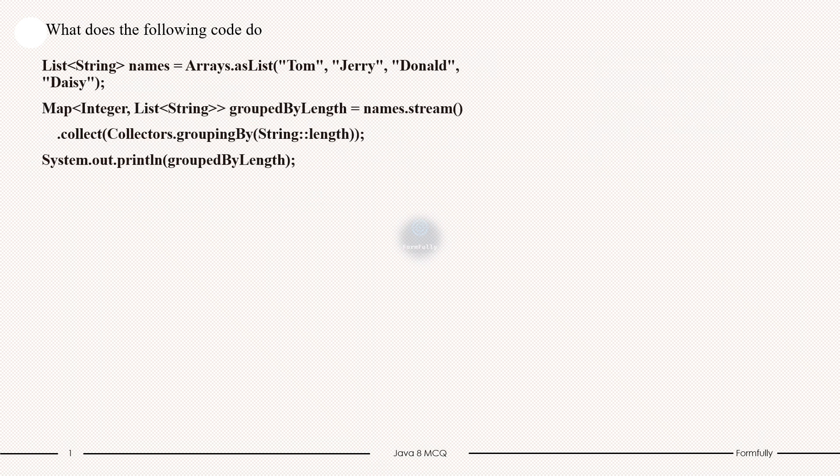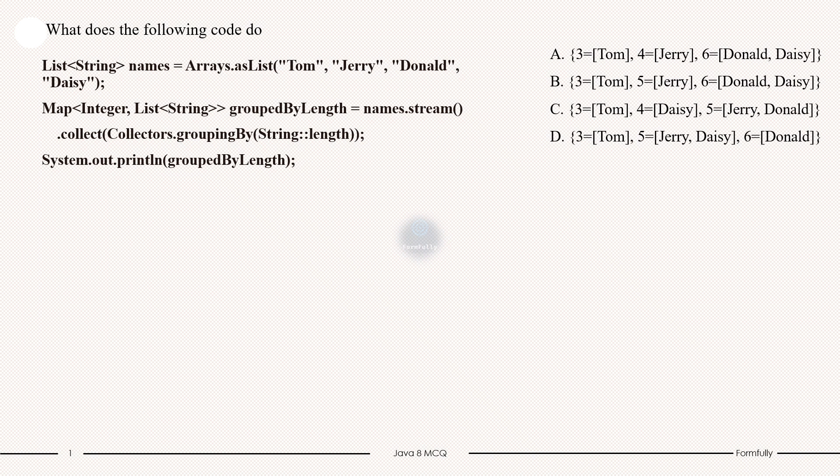Moving towards next question. Here are the outputs. You can analyze the code and come with the output. Let's break down the code step by step. First line, as previous, we have initialized a list of strings with the names Tom, Jerry, Donald, and Daisy. This is the input that will be processed.